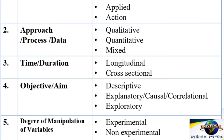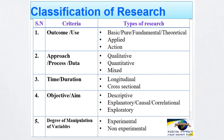The third criterion used to classify research is time or duration. As per the time or duration criterion, research can be classified into longitudinal and cross-sectional.